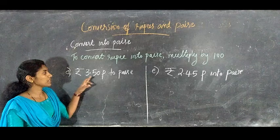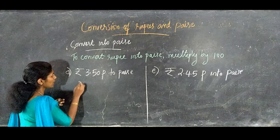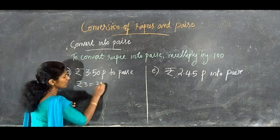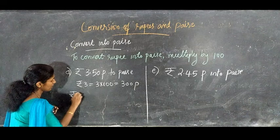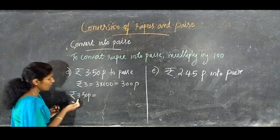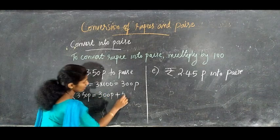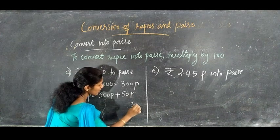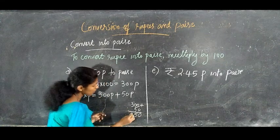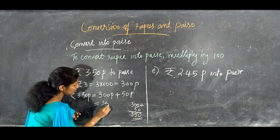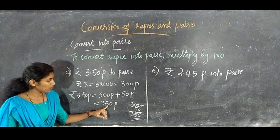Next, we have to convert 3 rupees 50 paisa into paisa. First, convert 3 rupees to paisa: 3 into 100 equals 300 paisa. Then, 3 rupees 50 paisa equals 300 paisa plus 50 paisa. Adding 300 plus 50 gives 350 paisa. So 3 rupees 50 paisa equals 350 paisa.